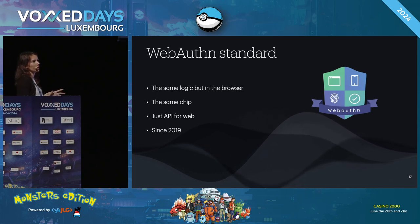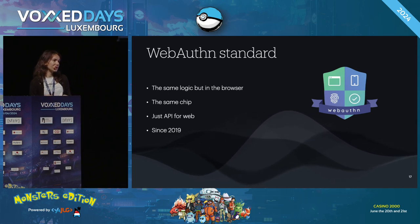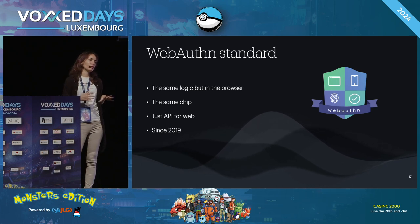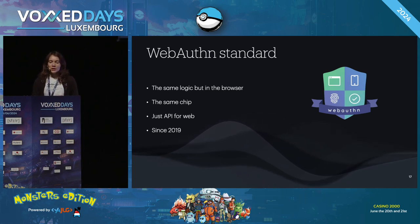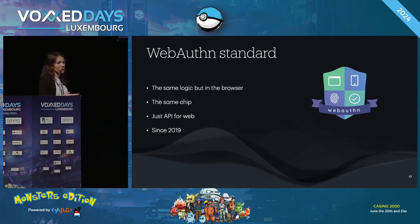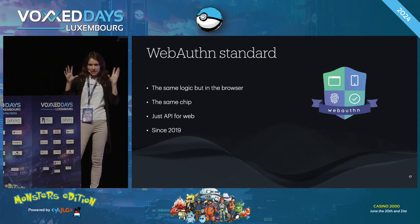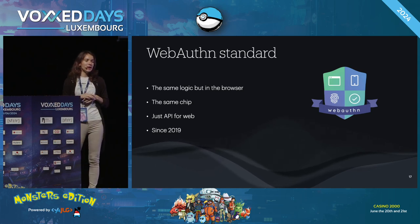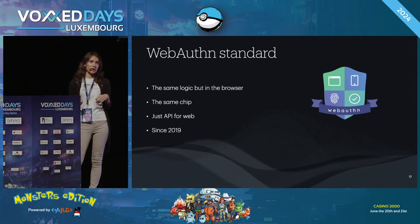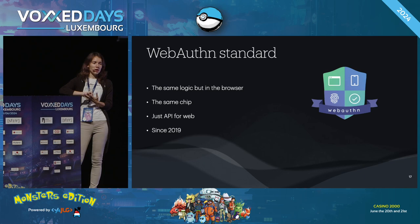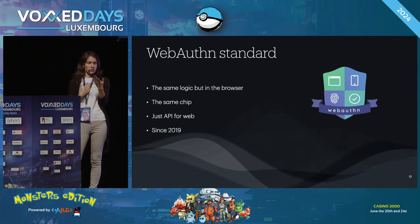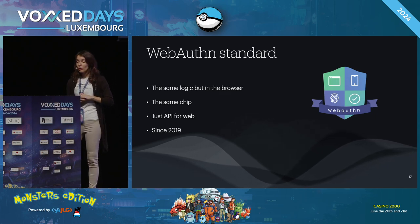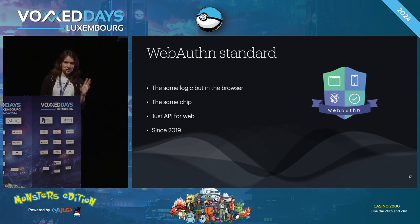The WebAuthn standard has been with us since 2019, but in 2022 major companies decided to invest in it seriously because password theft is a huge problem. The standard encourages you to use biometry and passkeys instead of passwords. It's become more convenient because it can work with password managers and the cloud — you can store passkeys in the cloud, and when you need one, use Face ID to retrieve it.